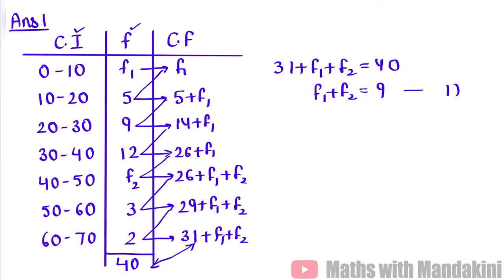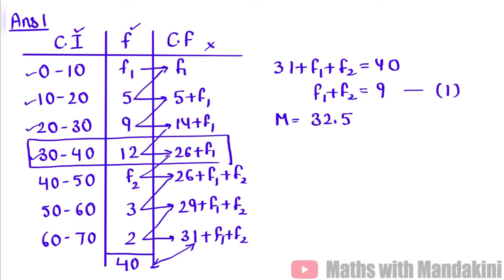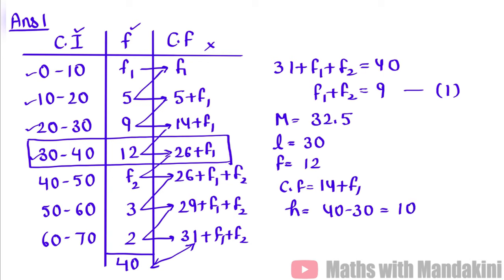The median is given as 32.5. When a median is given, we find the median class from the class intervals, not from the cumulative frequency. Where does 32.5 fall? Not in 0–10, not in 10–20, not in 20–30, but yes — in 30 to 40. So our median class is 30 to 40. We identify L = 30, F = 12, CF = 14 plus F1, and h = 40 minus 30 = 10. Since n = 40, n by 2 = 20.